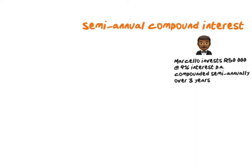You could also be asked to calculate compound interest semi-annually. Semi-annually merely means that you get interest twice a year, or every six months. So 9% per annum means you will get half of that each time for the six-monthly period — that's 4.5% for the first six months and 4.5% for the second six months.